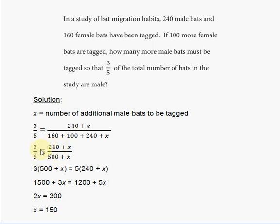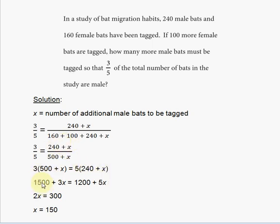Now you set up the proportion and cross multiply using the product of means equals product of extremes. So it's going to be 3 times (500 plus X) equals 5 times (240 plus X).